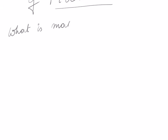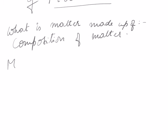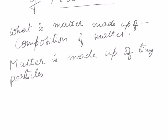What is matter made up of? That is called composition — composition of matter. Matter is made up of tiny particles called atoms and molecules.